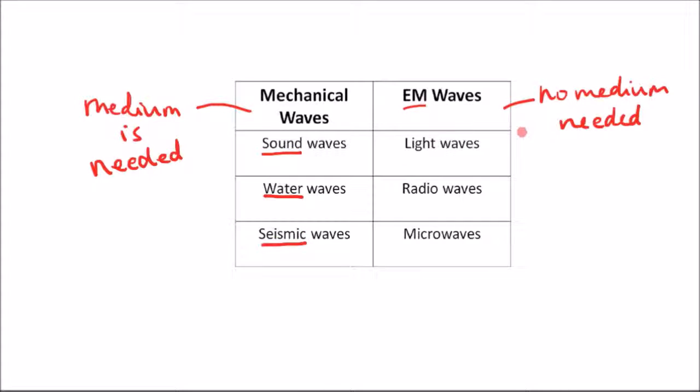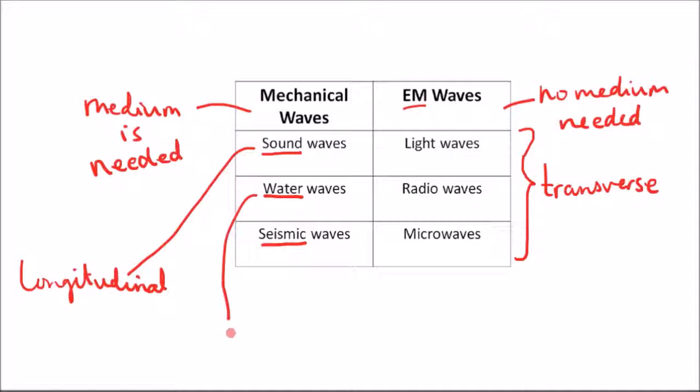Another thing to note is that electromagnetic waves are transverse, whereas mechanical waves can be either transverse or longitudinal. For example, sound waves are actually longitudinal, but water waves are transverse.